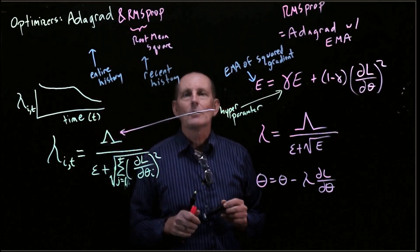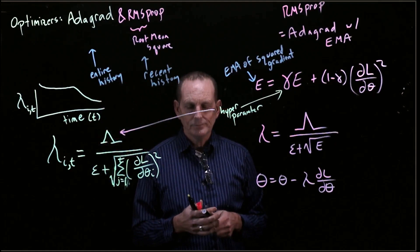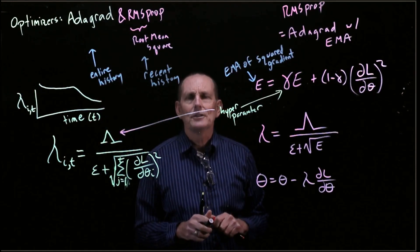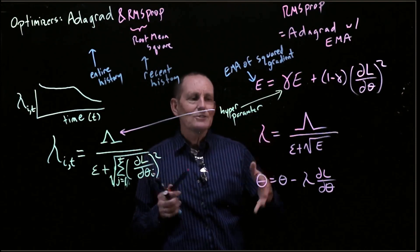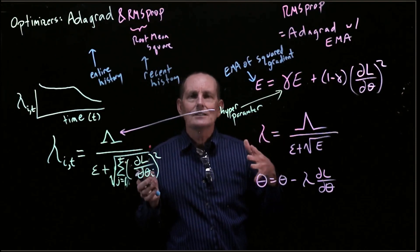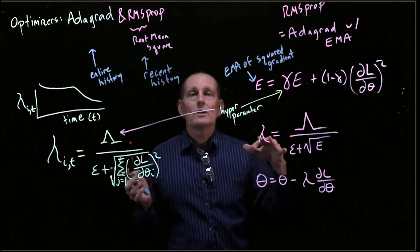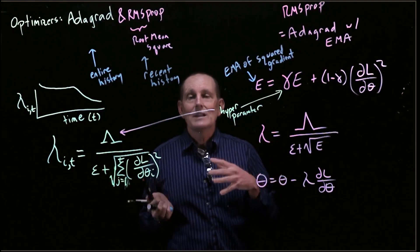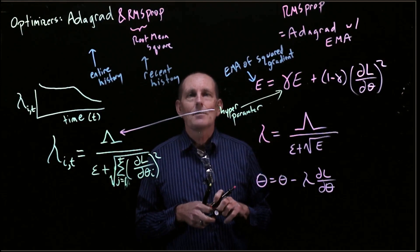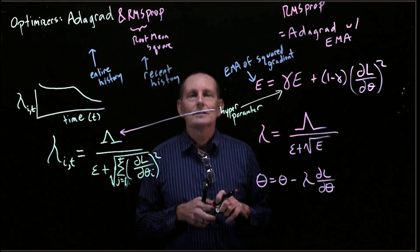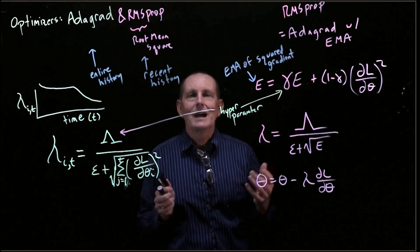So, exponentially weighted where we care more about the recent history. Here, equally weighted where we care about the entire history. And it makes sense to care about the recent history and not the entire history, because as we're updating all of these thetas, our whole landscape changes, and what our gradient is changes, and what has happened. So we don't want to be penalized for something that has happened in the past.